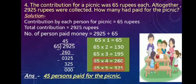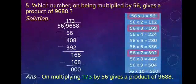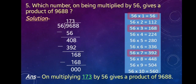325 minus 325 is 0. Quotient is 45 and remainder is 0. The answer is 45 persons paid for the picnic. Question number 5: Which number, when multiplied by 56, gives a product of 9688? In this question we will find the number which is multiplied by 56 to get 9688.